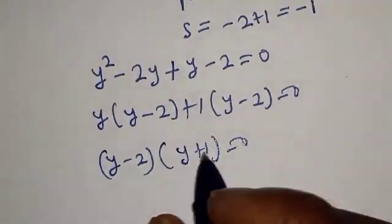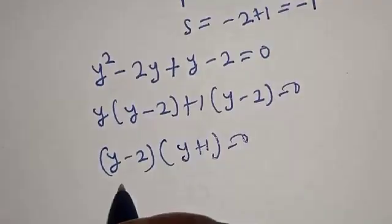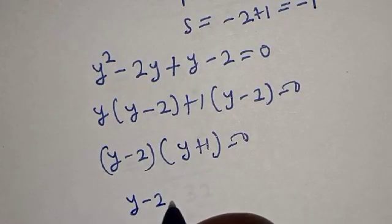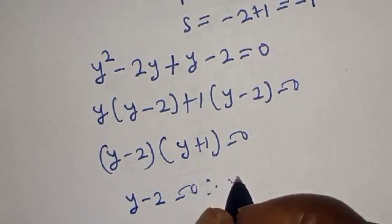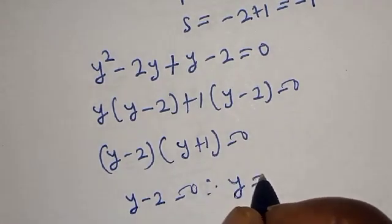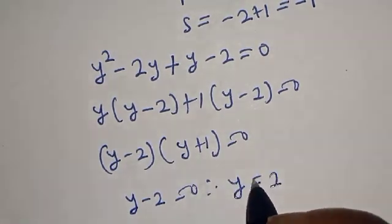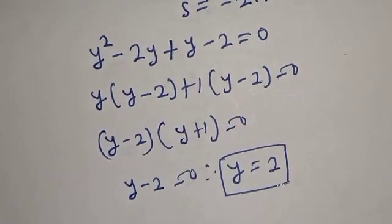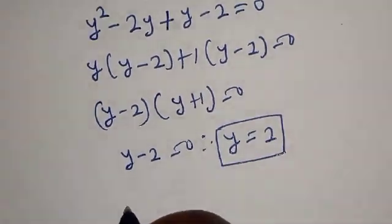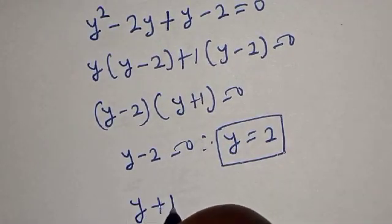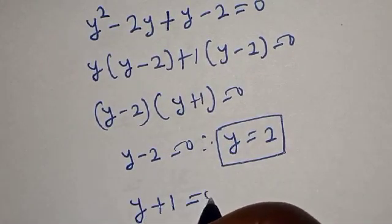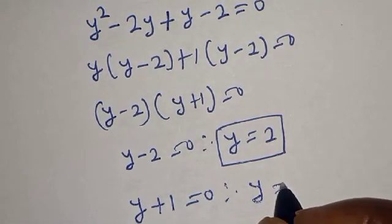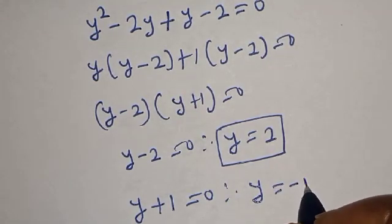This gives us y minus 2, bracket y plus 1, equals 0. There are two cases: y minus 2 equals 0, therefore y equals 2; and for the second case, y plus 1 equals 0, therefore y equals minus 1.